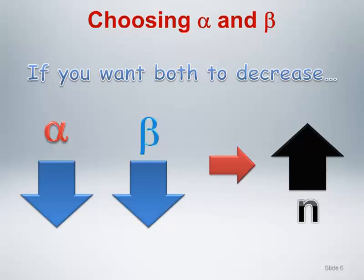Use of these values suggests the following: provided there is a difference of the magnitude expected between treatment arms, there is an 80% chance that a test of hypothesis will yield a statistically significant result.